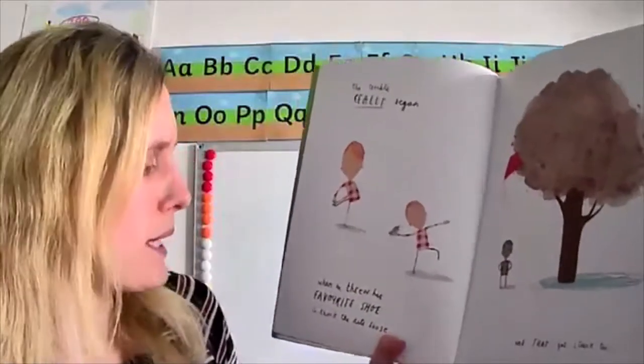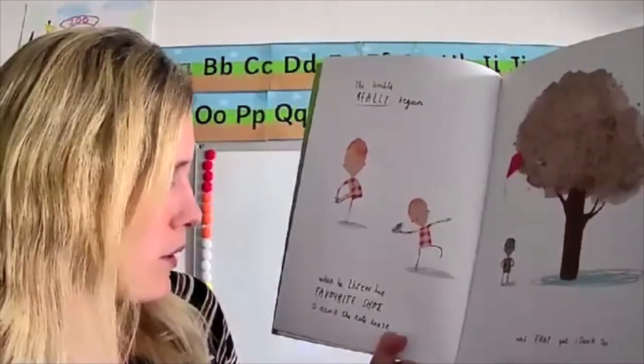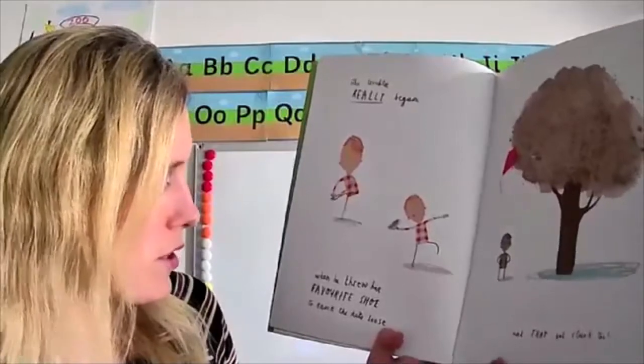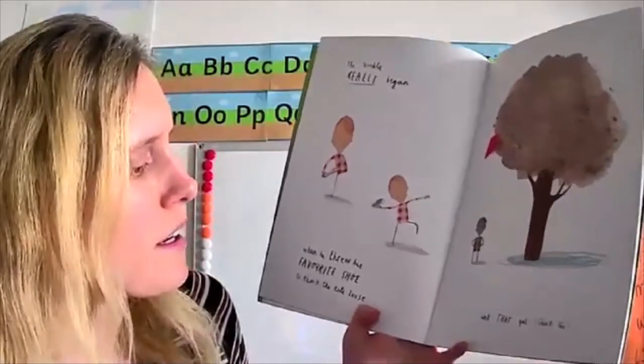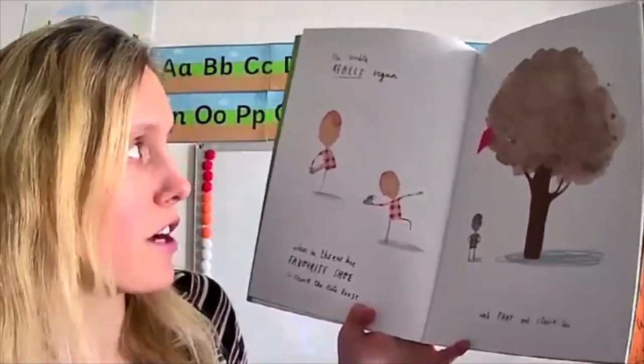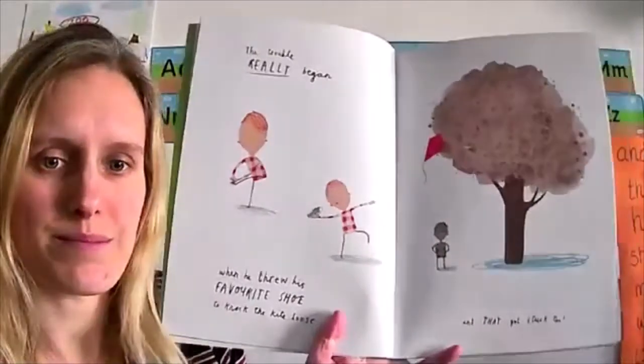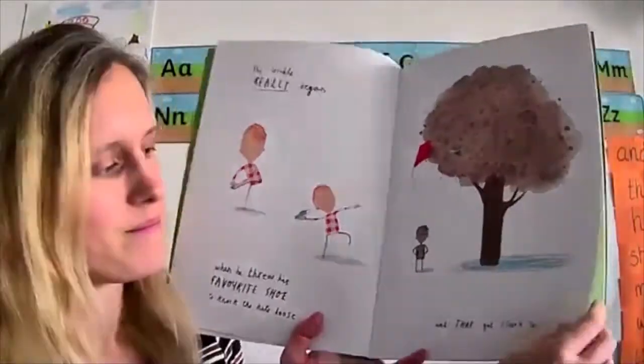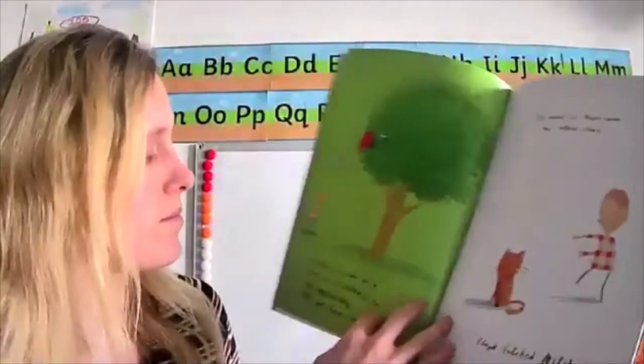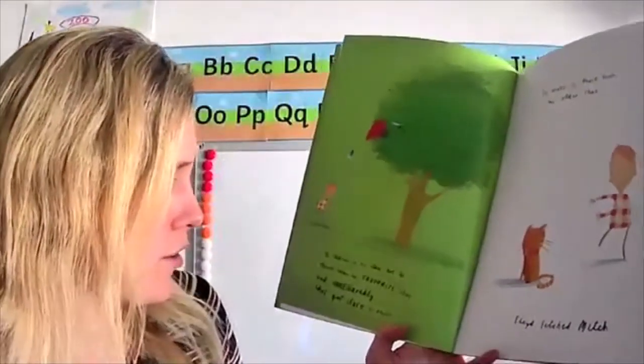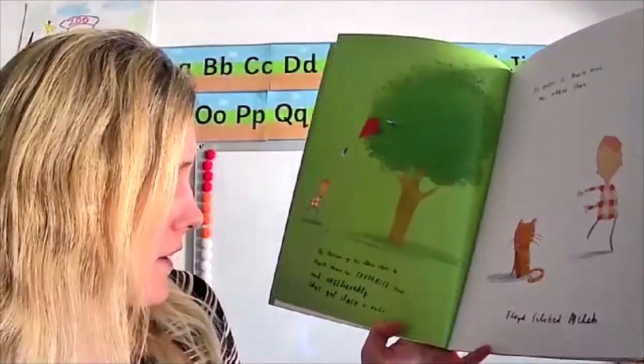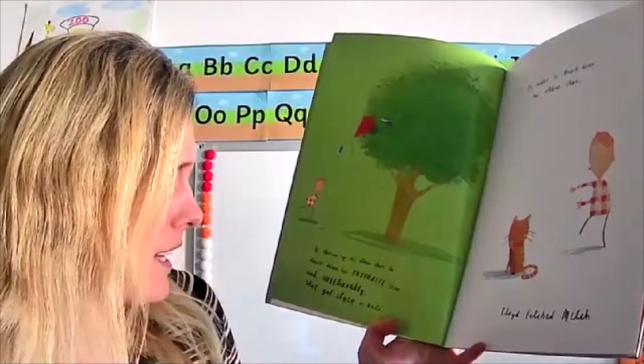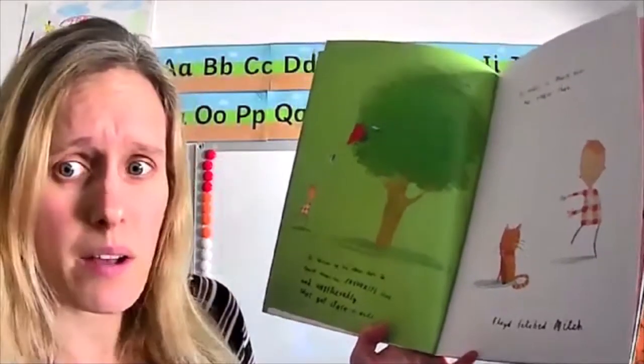The trouble really began when he threw his favourite shoe to knock the kite loose and that got stuck too. He threw up his other shoe to knock down his favourite shoe and unbelievably that got stuck as well.